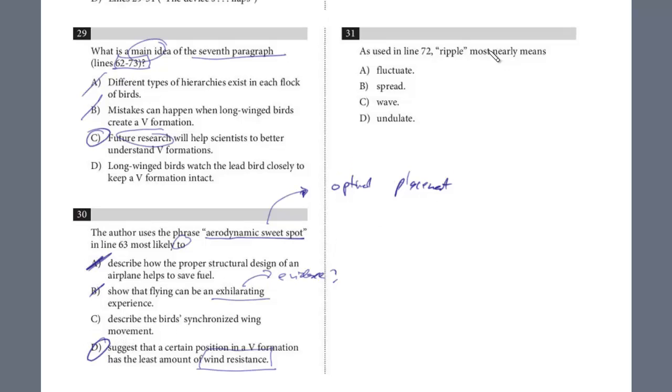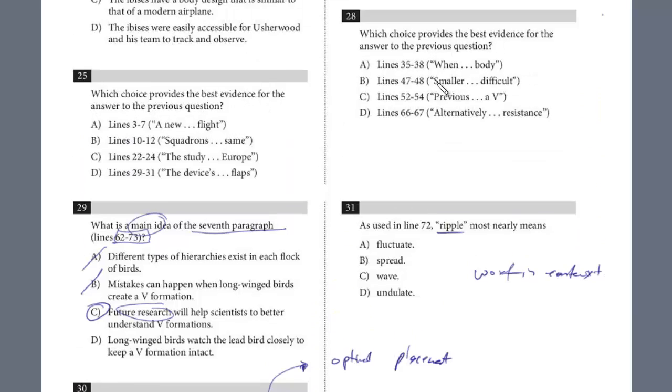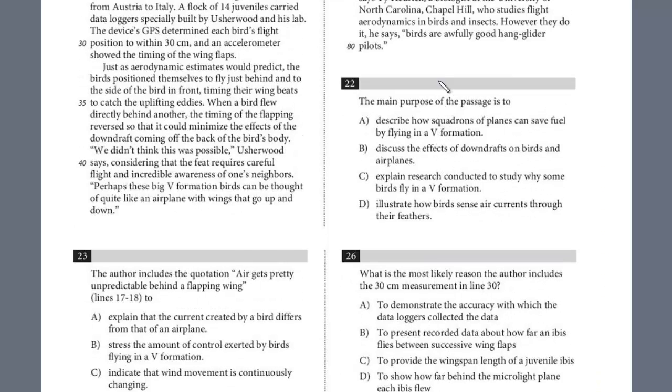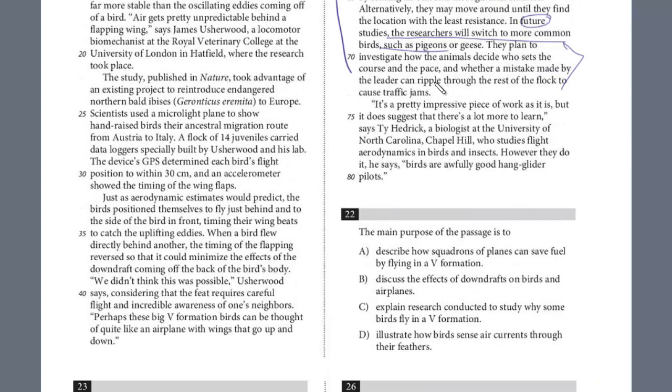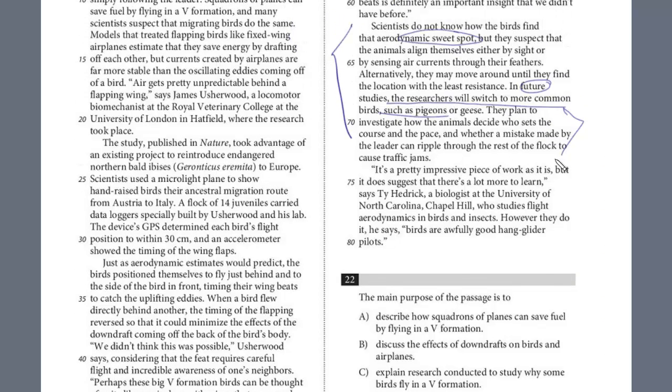And the last one, this is a word in context. We want to see what in this context does ripple mean. Let's try to predict it in line 72. I think that was in the same paragraph we just read. It's at the end of this paragraph here, that seventh paragraph. They plan to investigate whether a mistake made by the leader can ripple through the rest of the flock to cause traffic jams. So, think about it.